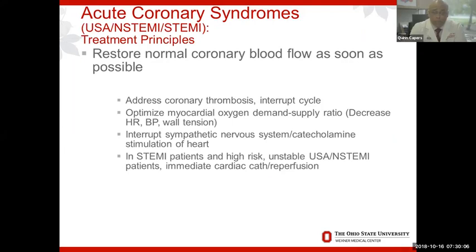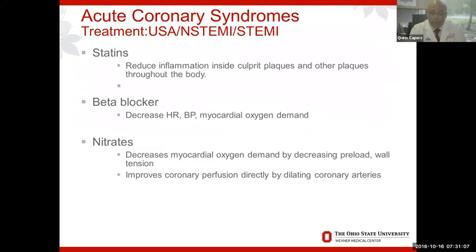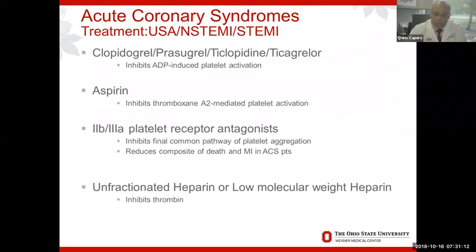We know the problem is abrupt cutoff of blood flow, so we must restore it — either with drugs or mechanically. But while preparing to do that, we need to supply oxygen, slow the heart rate to prolong diastole, since forward blood flow in the coronaries happens during diastole. We block catecholamines — epinephrine and norepinephrine — with beta blockers, which also slow the heart down and prevent arrhythmias. Nitrates reduce preload coming back to the heart, reducing wall tension and ischemia. All these things are done simultaneously while we prepare to reperfuse the occluded coronary artery. We always have these patients on statins, beta blockers, and nitrates.